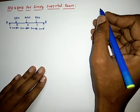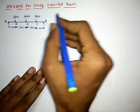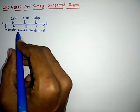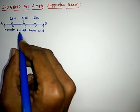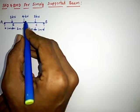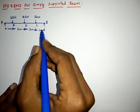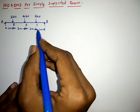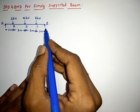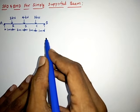Here we are looking at shear force and bending moment diagrams for a simply supported beam. The beam is given with loads of 2 kN, 4 kN, and 2 kN acting at specific points.